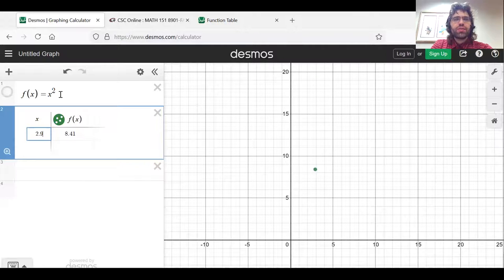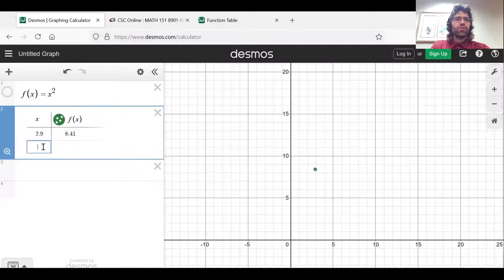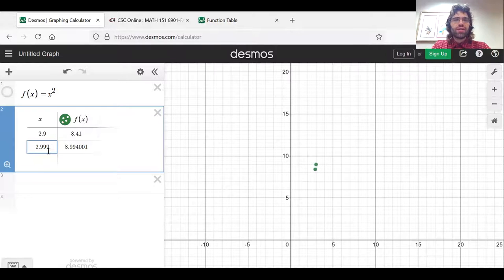Let's ask what happens as x approaches 3. So we start with x equals 2.9, f of x equals 8.41. Here's a number that's even closer to 3 than 2.9 was, and f of x is now 8.99 something.